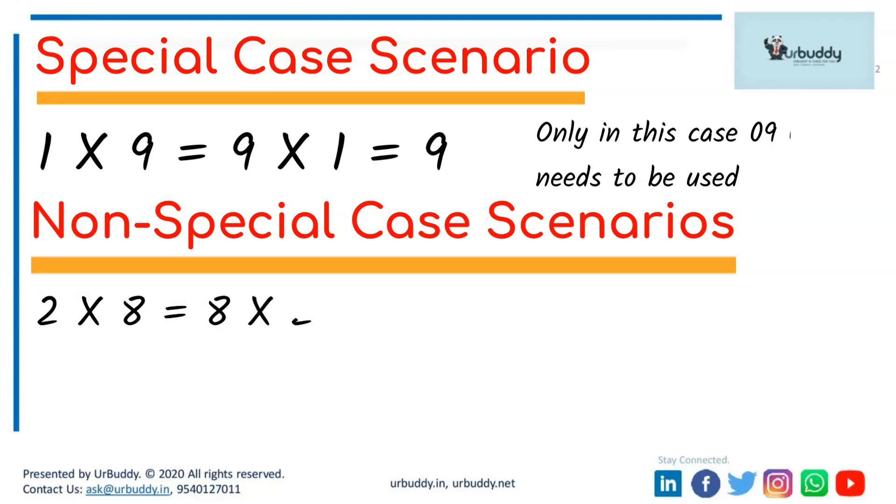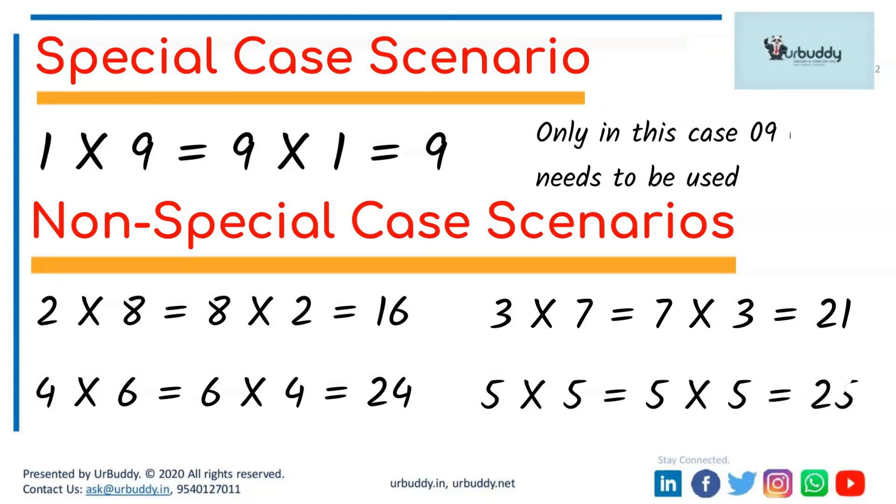And 5 multiplied by 5 is 25. So there is only one special case scenario where there is 1 and 9 at the end of the digits of the two numbers.